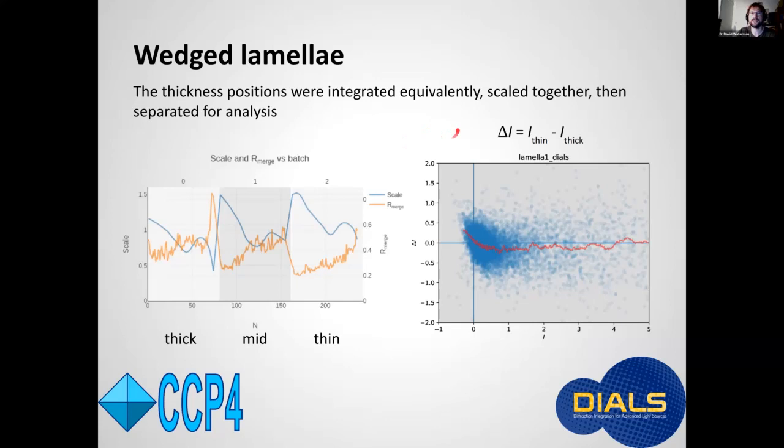Then calculate a delta I value so define that as the difference between each reflection in the thin data set versus the thick data set and the idea is that any structure left in that quantity after correcting the overall scale may say something about physical differences between the data sets.